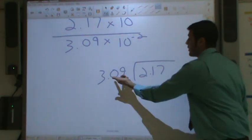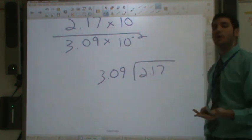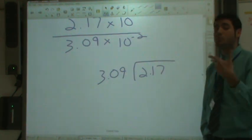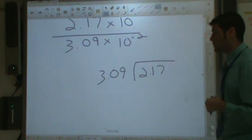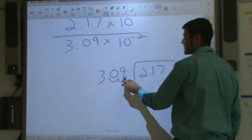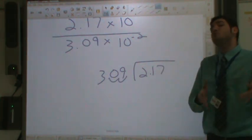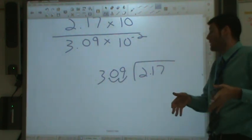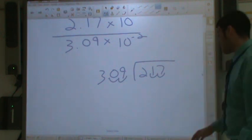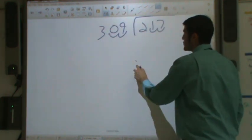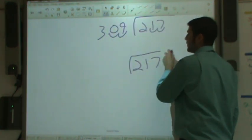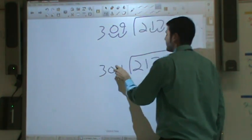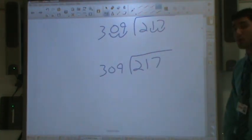However, we have a decimal up here. We cannot divide by a decimal on the outside. So what we do is move it over so it's no longer a decimal. We move it over two spaces. If we move it over two spaces on the outside, we have to move it over two decimal points on the inside. So now we rewrite these: 2.17 and 309.